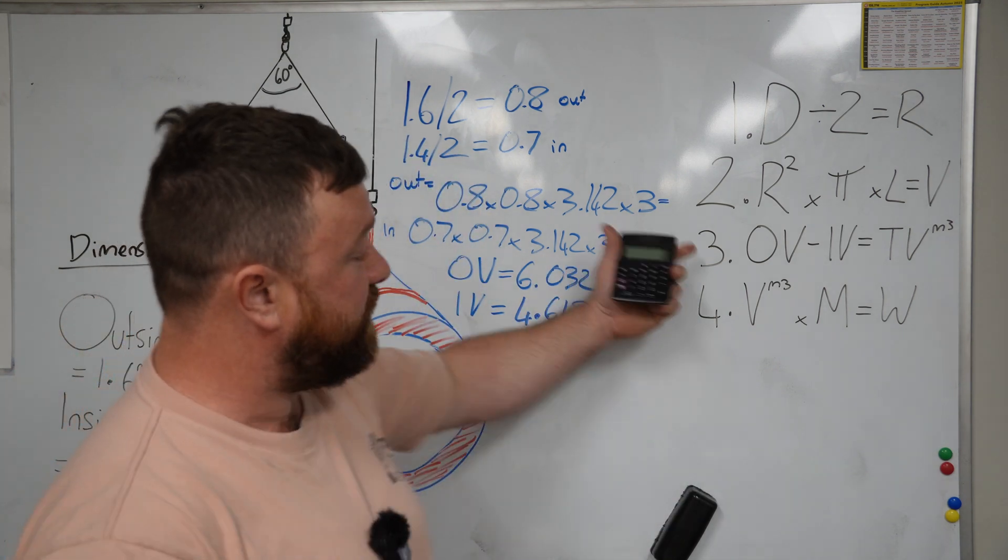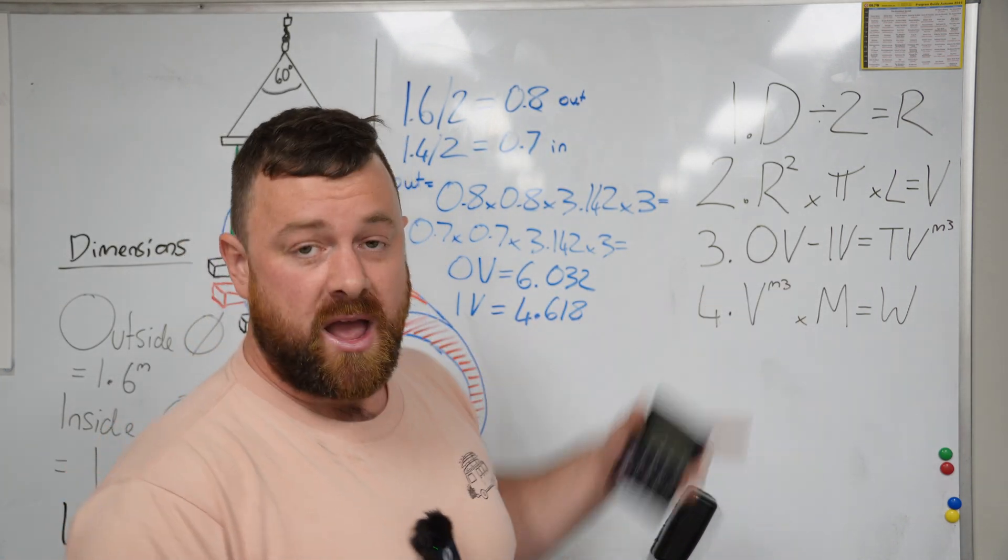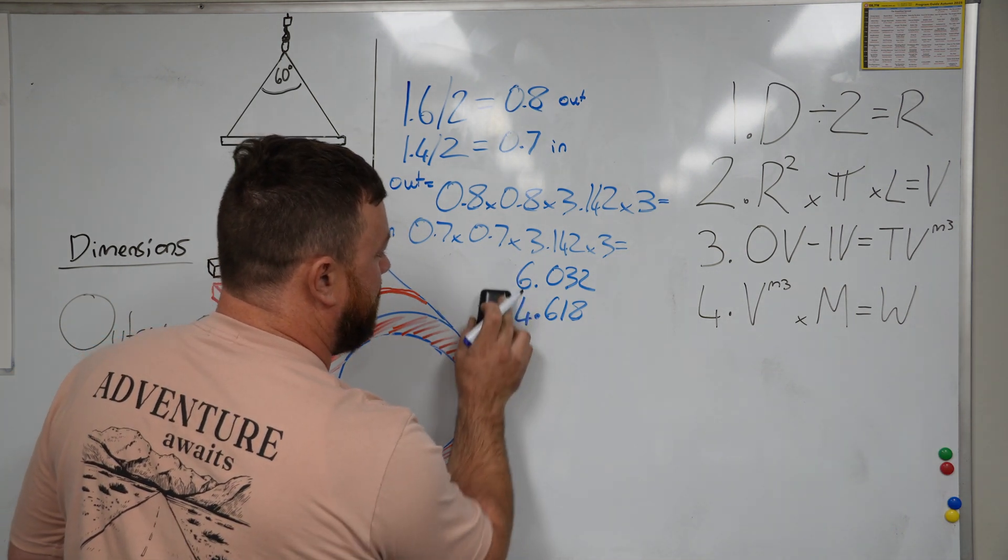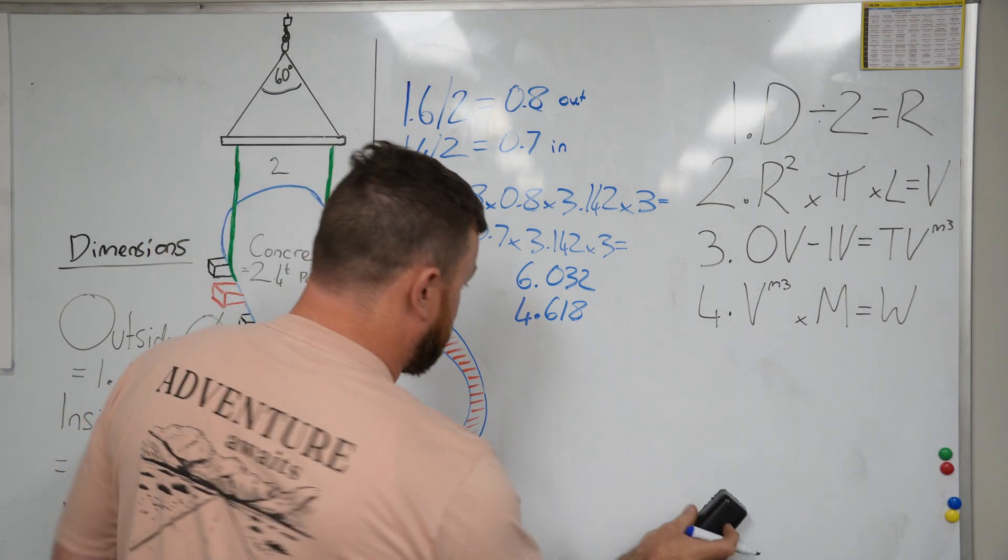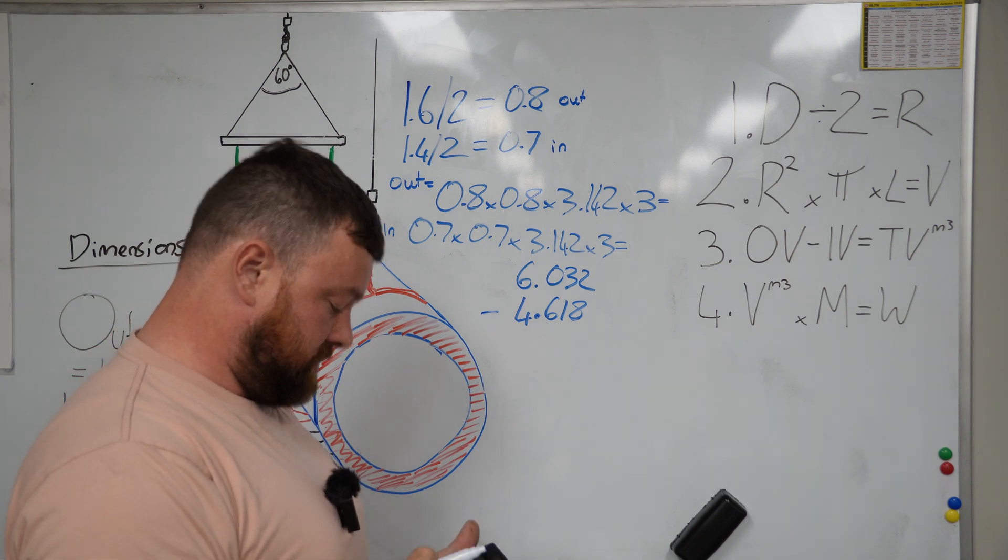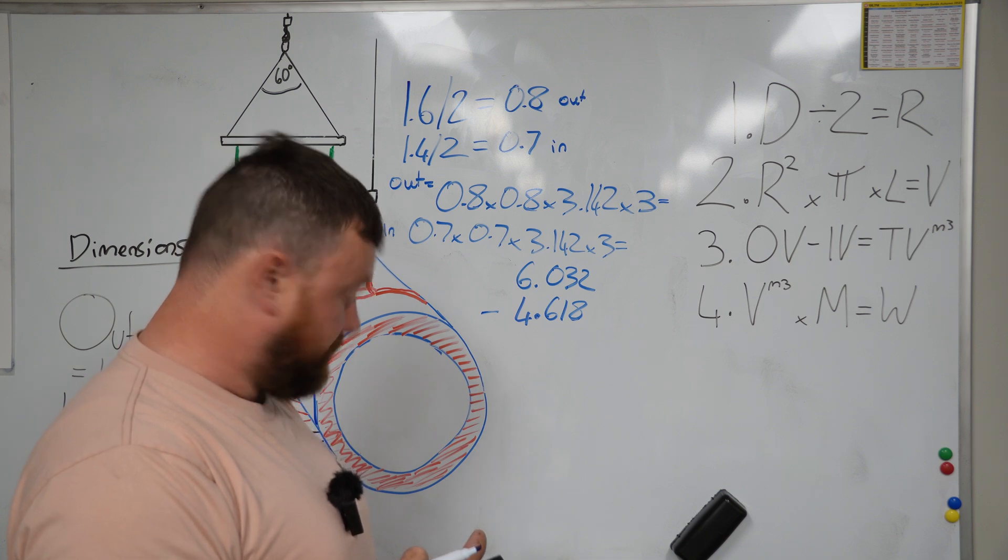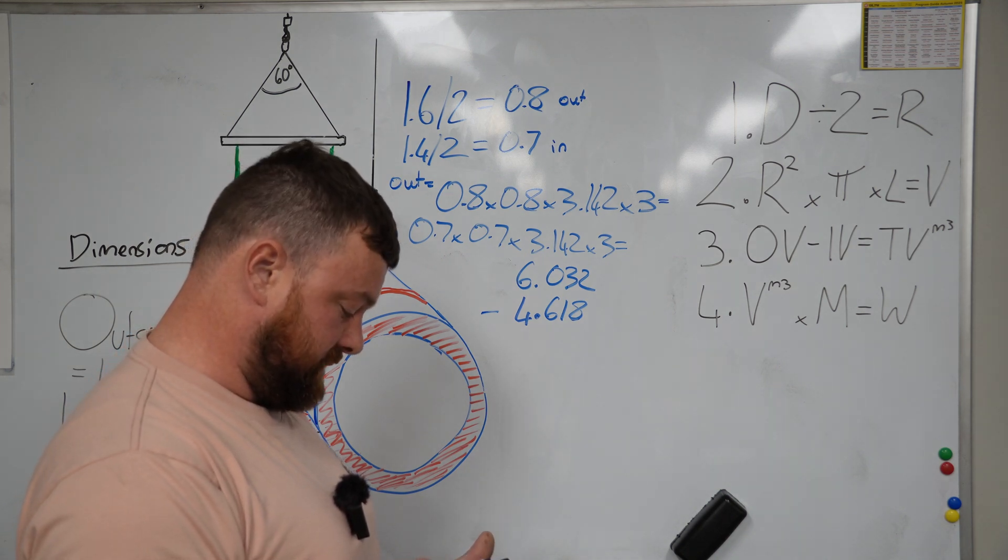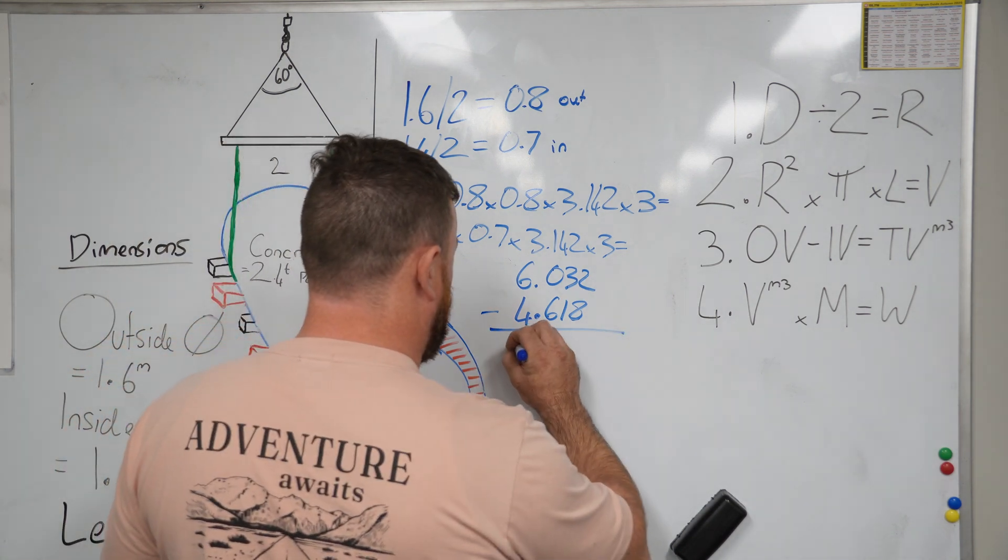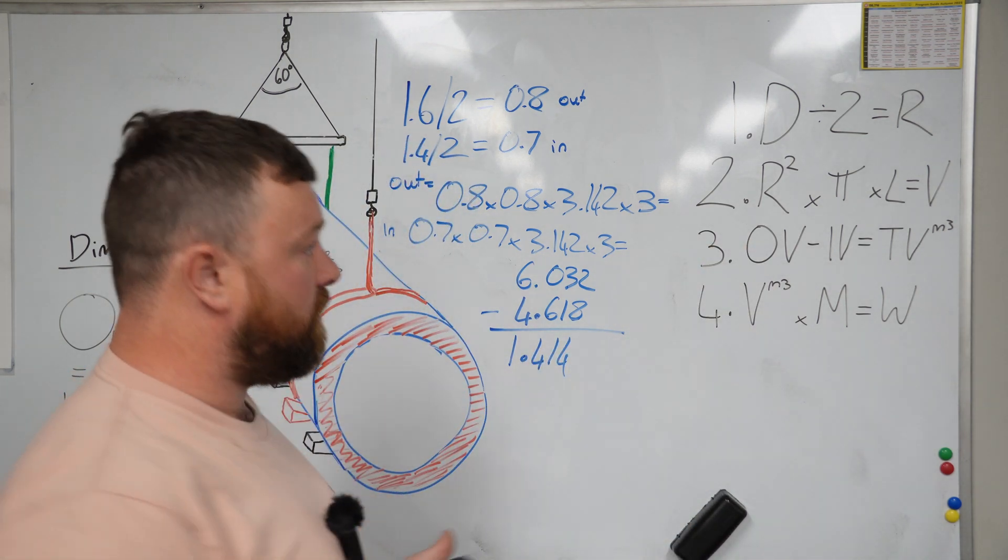Now we want to do our third part of our formula. We want to subtract our inside volume away from our outside volume. So I'm just going to rub these bits out here. If you need to rewind the video to find out how I got these numbers, then do so. 6.032 take 4.618 is going to give me 1.414.